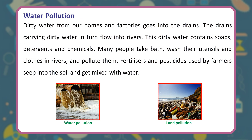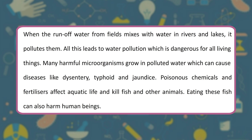Water pollution: Dirty water from our homes and factories goes into the drains, which flow into rivers. This dirty water contains soaps, detergents, and chemicals. Many people bathe, wash utensils, and wash clothes in rivers, polluting them. Fertilizers and pesticides used by farmers seep into the soil and mix with water. When runoff water from fields mixes with rivers and lakes, it pollutes them. Polluted water causes diseases like dysentery, typhoid, and jaundice, and poisonous chemicals kill fish and other aquatic animals.